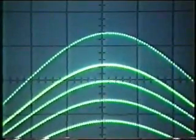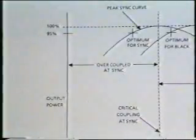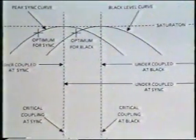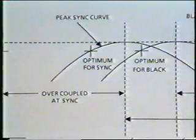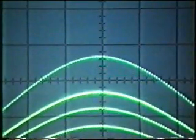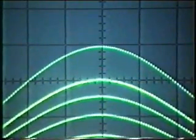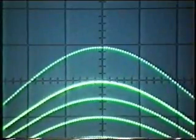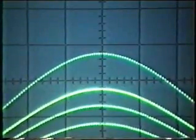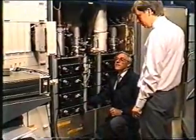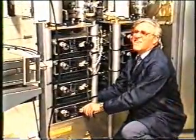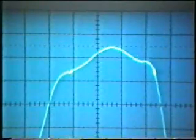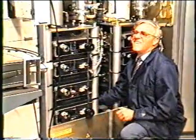Note that the sync power will not be correct at this time. Critical coupling for black level occurs at a lower coupling angle, but at this angle the syncs are undercoupled and the tube is potentially unstable. The effect shown here is for demonstration purposes only and should not be repeated. Having maximised the output power, the output cavity and coupling loop controls must not be touched. It is necessary to retune the other cavities now to bring the amplitude frequency response back within specification.